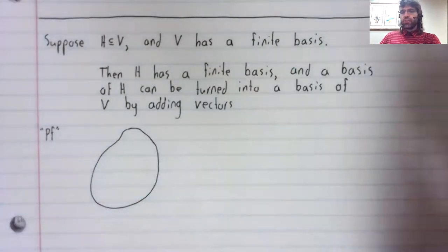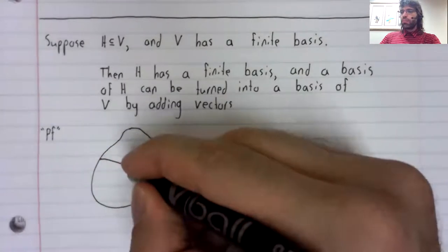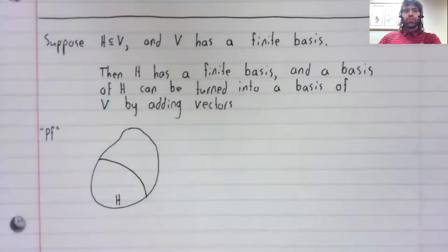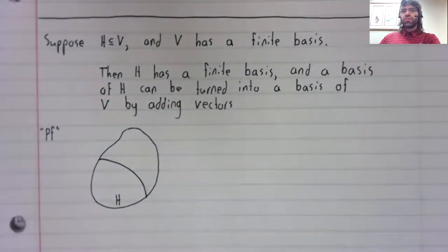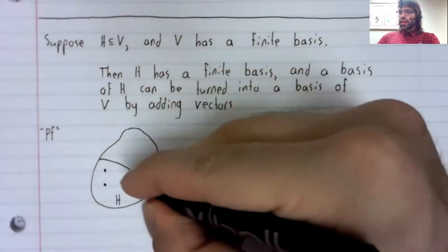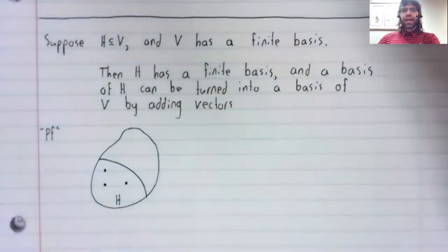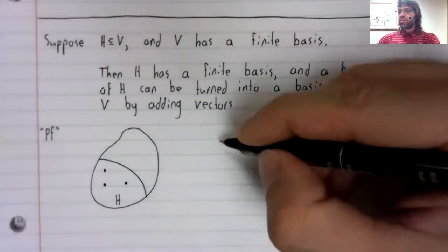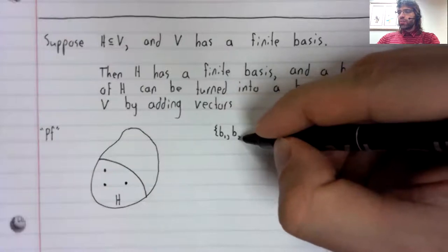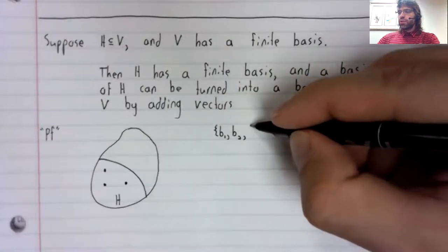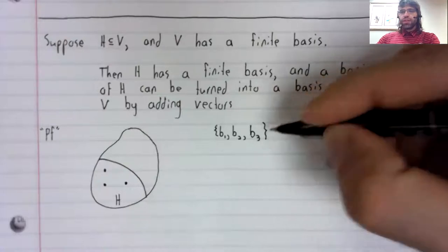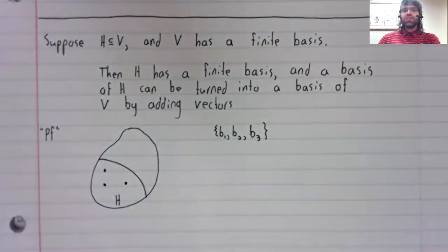Now, an argument for this theorem. We have a vector space V, and we have H inside of it. And H has a basis—call it b1, b2. In this picture, there are three vectors in the basis, so let's go with that.